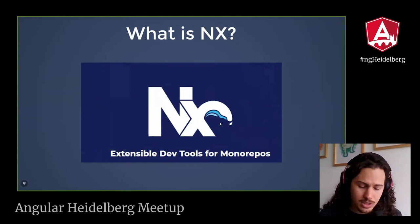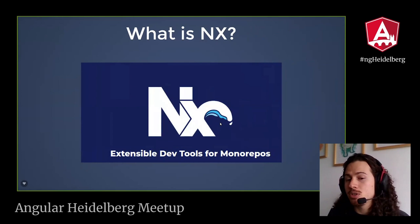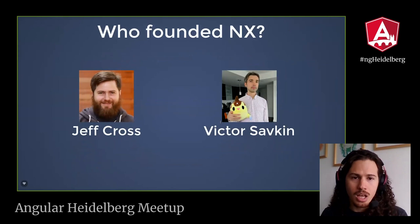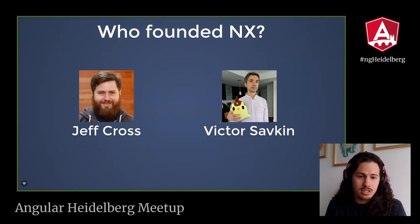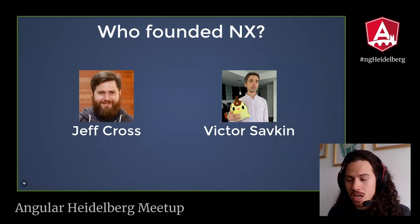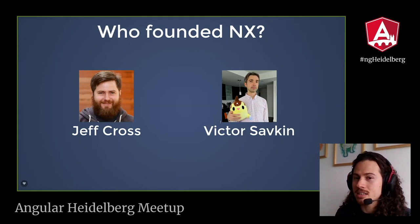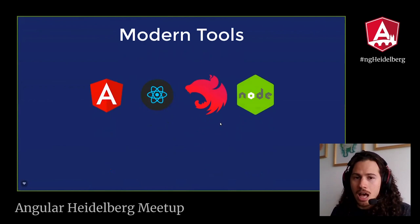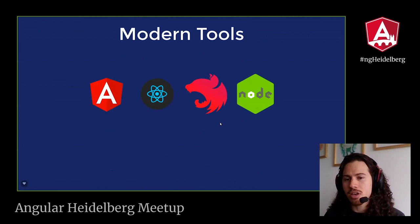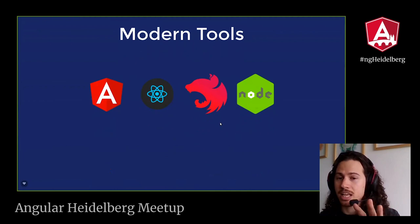This is when NX comes in. What is NX? NX is extensible tools for Monorepos — in plain English, it is a set of scripts and tools that help you manage your Monorepo. NX was founded by two people who both used to work at Google on the Angular team. They decided to create a consulting company, and with every company they helped they discovered the same needs — that is why they created NX. NX supports Angular, React, Nest, and Node.js applications.